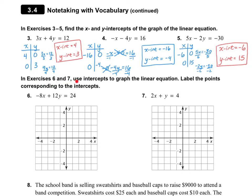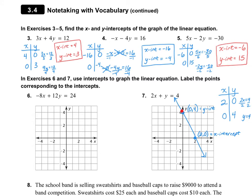In exercises 6 and 7, they want us to use the intercepts to graph the linear equation and label the points that correspond to the intercepts. Let's take a look at number 7. We're going to plug in our zeros, just like we did in numbers 3, 4, and 5. When I plug in 0 for Y, we get 2X is equal to 4, and when I divide out 2, I get 2. So (2, 0) is my X-intercept. When I plug in 0 for X, we get Y is equal to 4, and I don't need to divide anything out. So (0, 4) is my Y-intercept. Then I just need to connect those two points with a line.